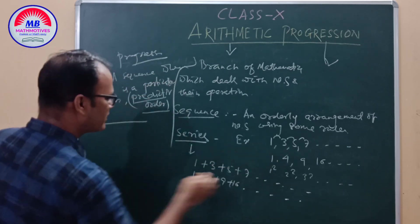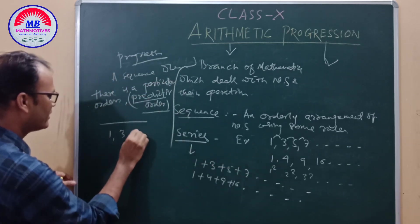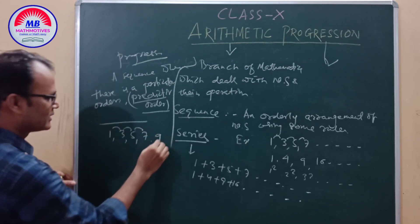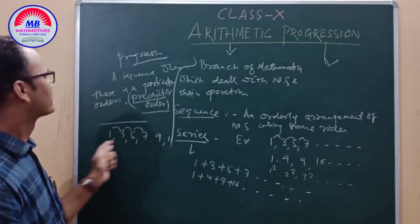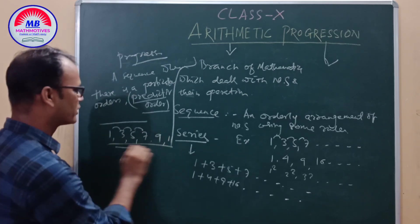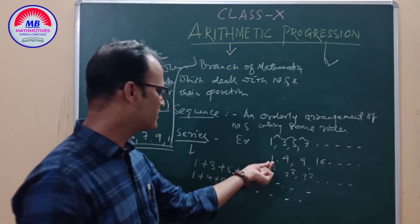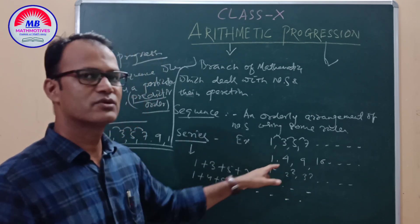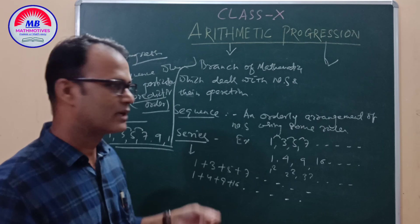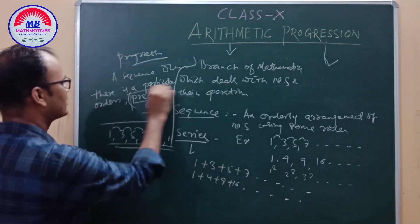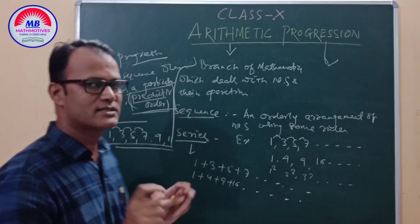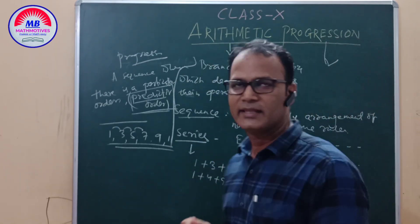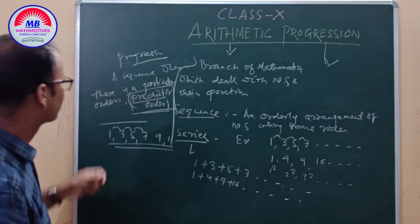Here we see 1, 3, 5, 7 — the difference is 2, and we can identify the predictive order. So this is called a progression. Similarly, 1 squared, 2 squared, 3 squared — this is also called a progression. That means we can find the predictive order and determine the next terms. This is called a progression.